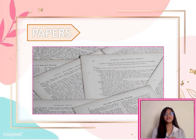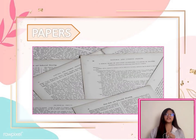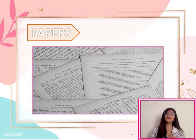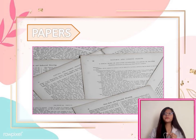First, we have paper. We can find it in our home, but what makes it organic? There is no chemical symbol for paper since it is not an element, but rather it is a mixture of several different compounds. Paper is mainly carbon, hydrogen, and oxygen.